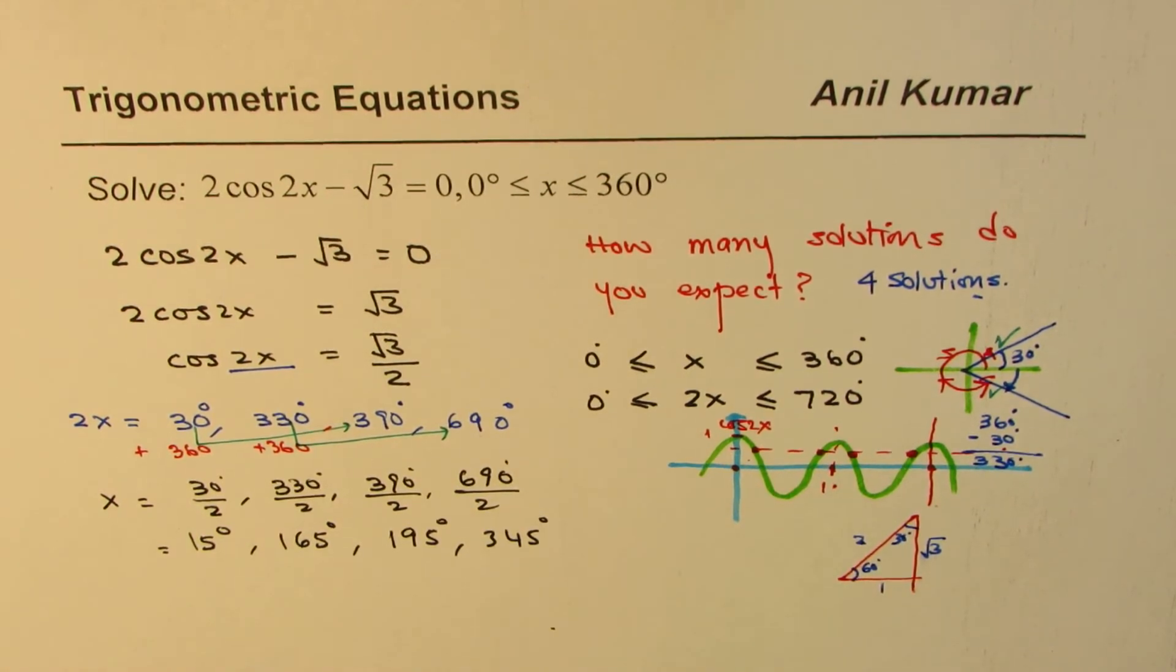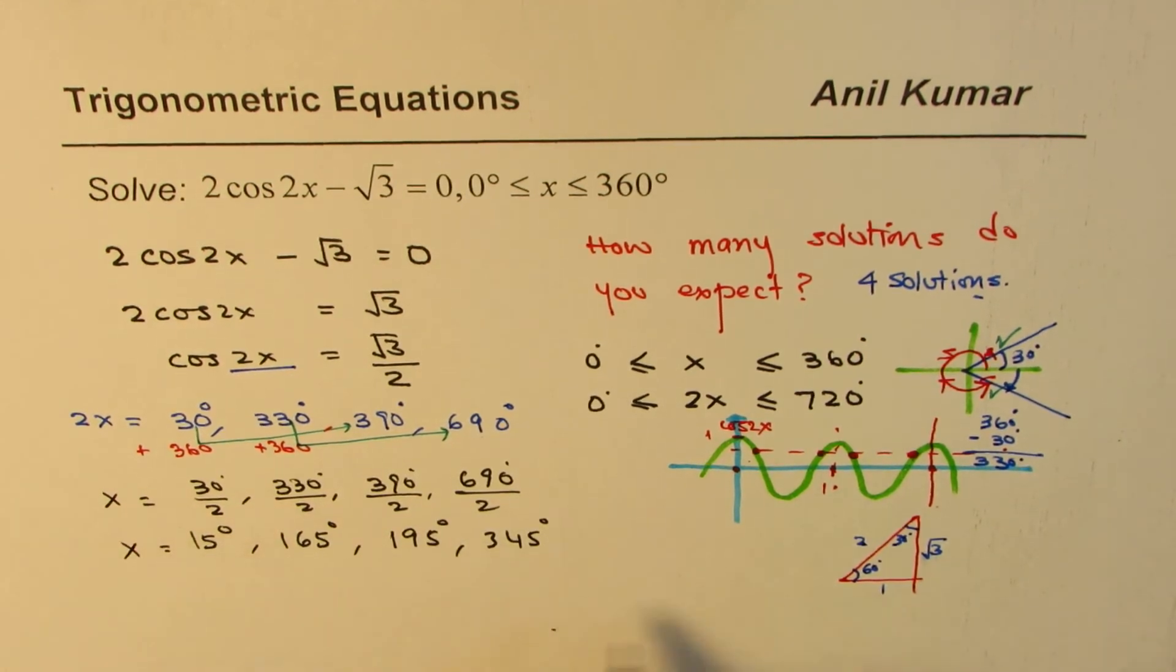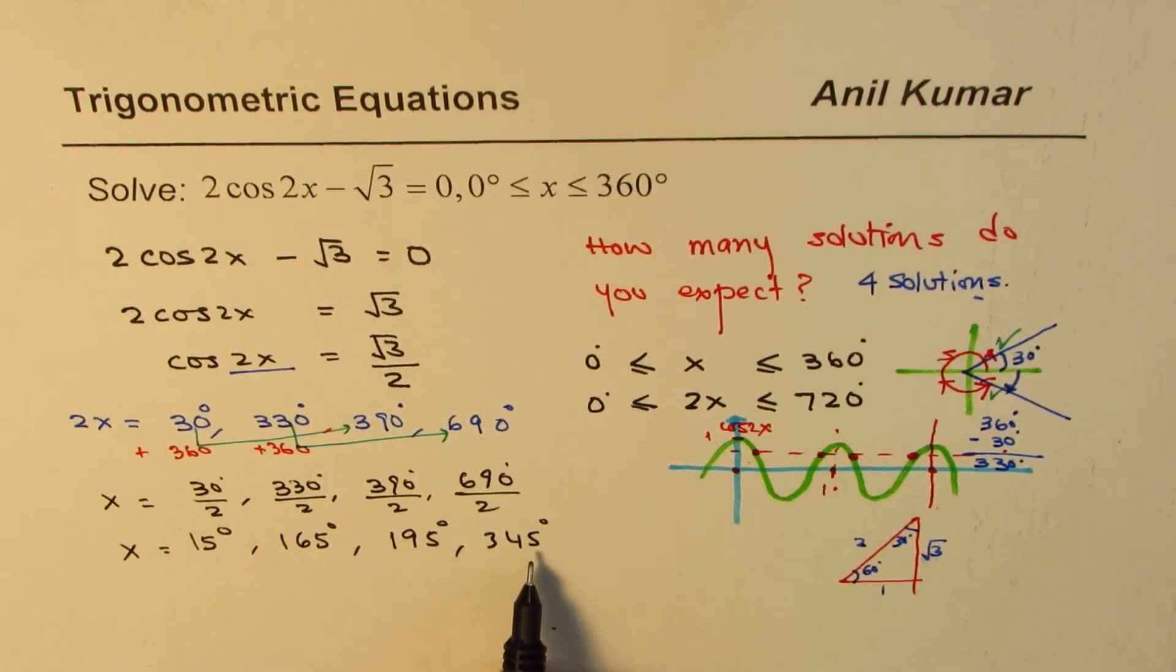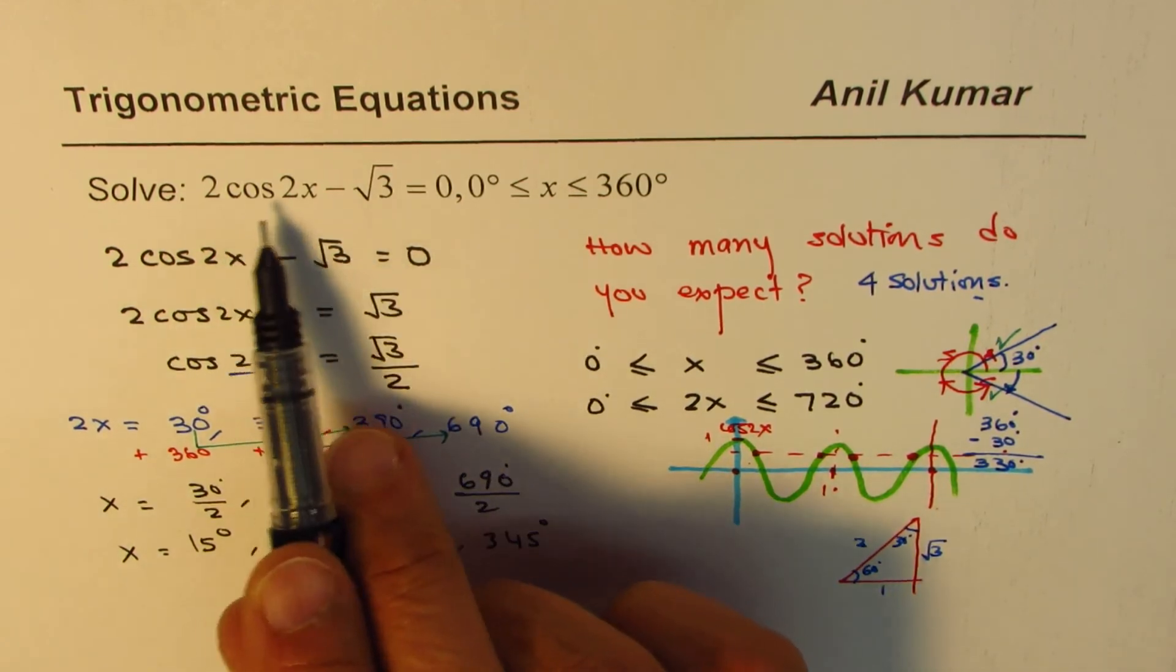So that is how you get the angle x like this. So there are four solutions. Since because we have cos 2x.